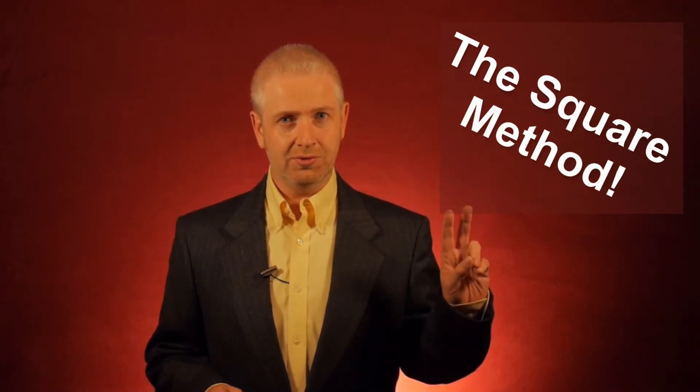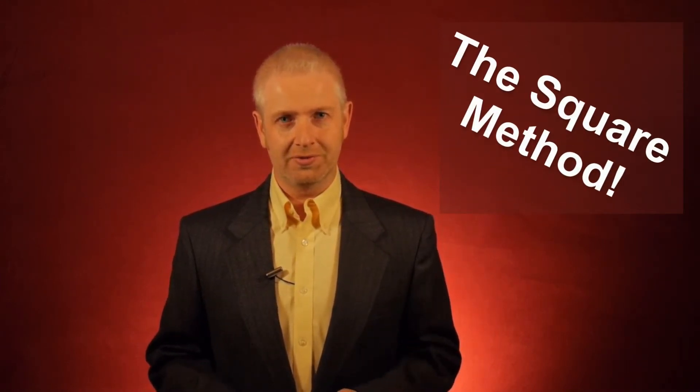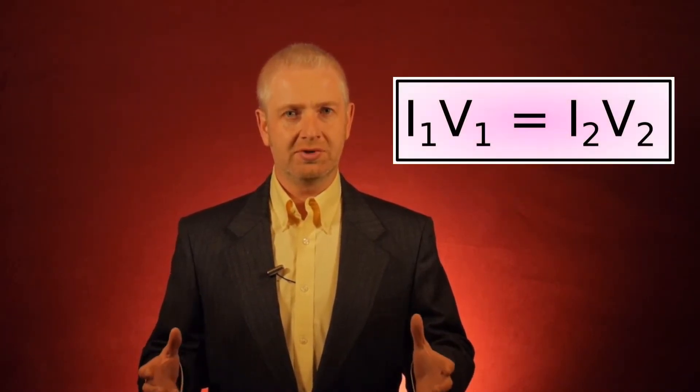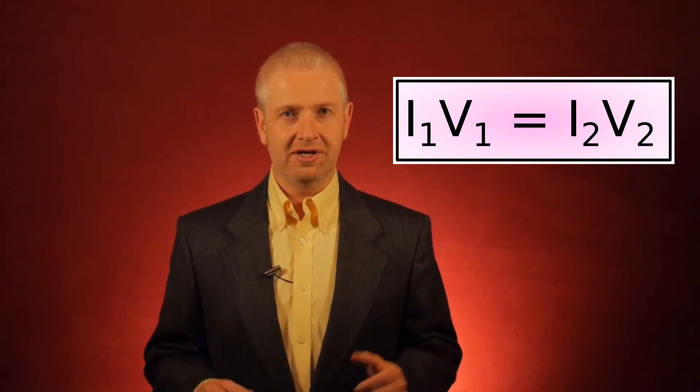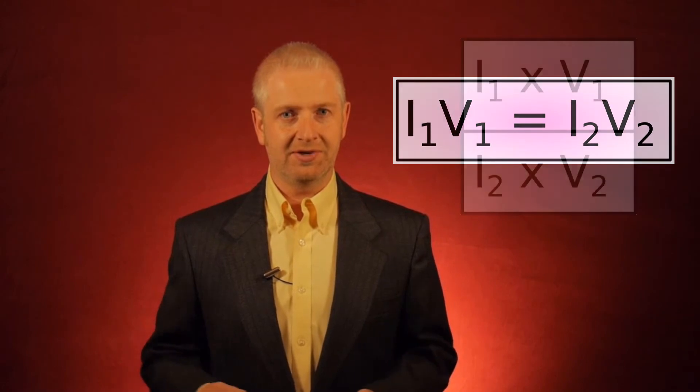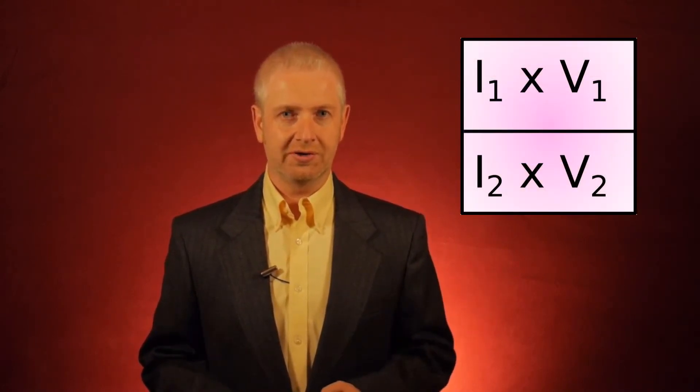The square method is a little bit more straightforward than that. It only has two rules, and the rules are nice and straightforward. So first of all, what we would do is we would take the two equations that are written as equal to each other. So I1 times V1 equals I2 times V2, and we would put them on different lines of a square.